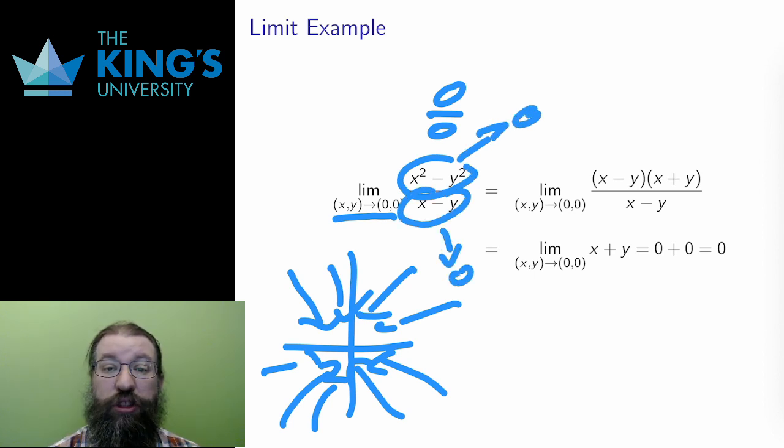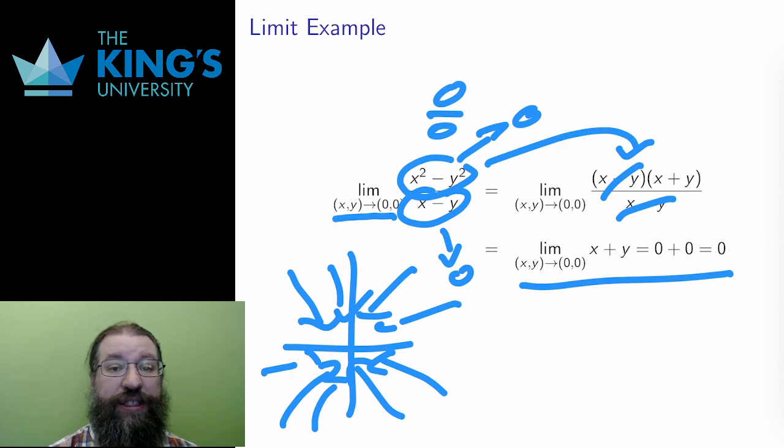I would like to simplify this with algebra. The numerator is a difference of squares, so I can factor. Then, after factoring, I can cancel off the (x-y) term. After doing so, what's left is a continuous function, so I can just evaluate and conclude that this limit is 0.